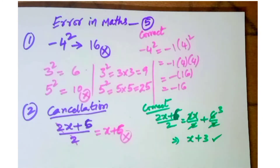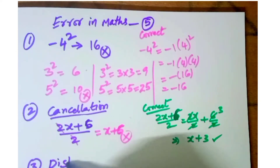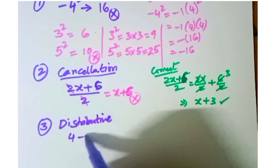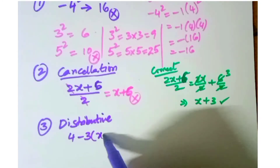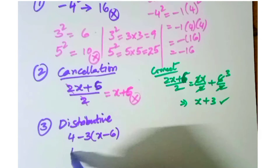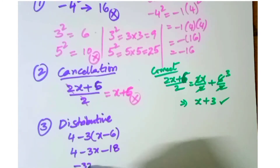The third error is the distributive property. Students make mistakes applying the distributive property. For example: four minus three into x minus six. They incorrectly write it as four minus three x minus 18, and get minus 40 — that is wrong.